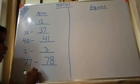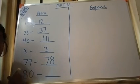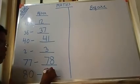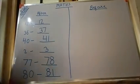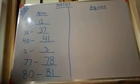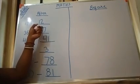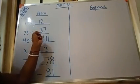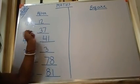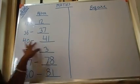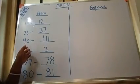Suppose the number is 80. What is the after number of 80? It will be 81. Why 81? Because 81 is just next to 80. So the after number of 80 will be 81. To recap: 11's after number is 12 because 12 is next to 11. 36's after number is 37 because 37 is next to 36. 40's after number is 41.